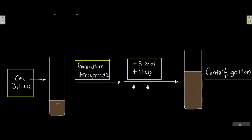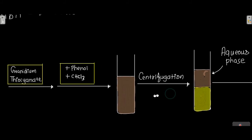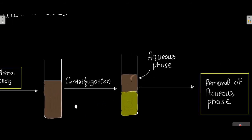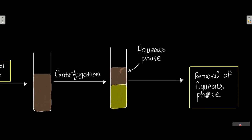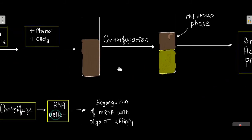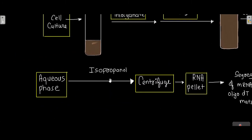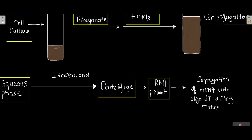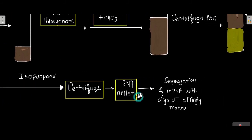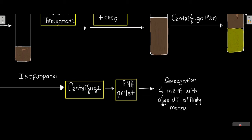You centrifuge that mixture, and after centrifugation you remove the aqueous phase. To that aqueous phase you add isopropanol and centrifuge again — the RNA will precipitate and an RNA pellet will form. Once you have the RNA, you segregate the mRNA using an oligo-dT affinity matrix, since you specifically want mRNA rather than all RNA.